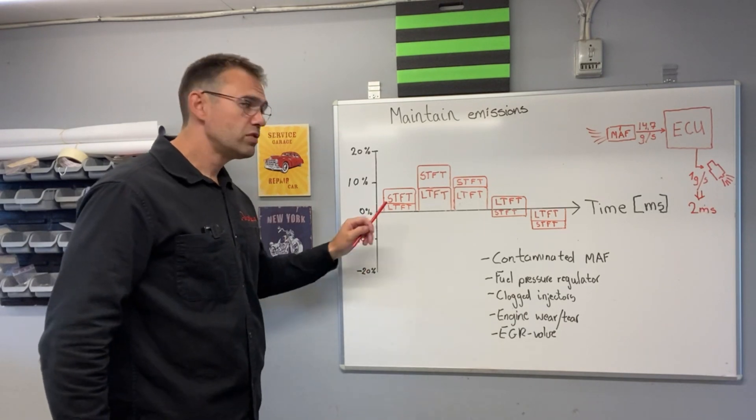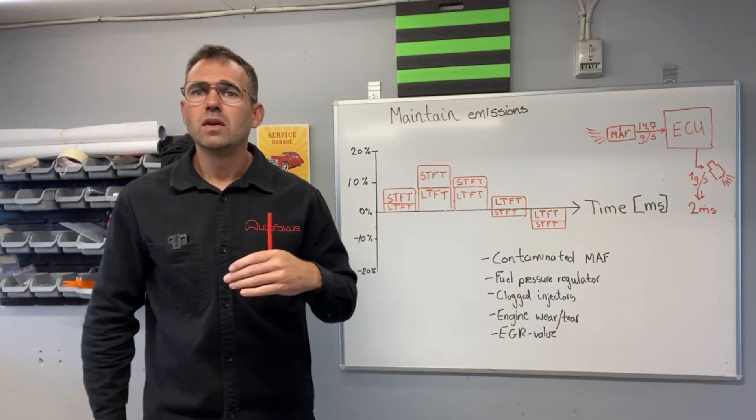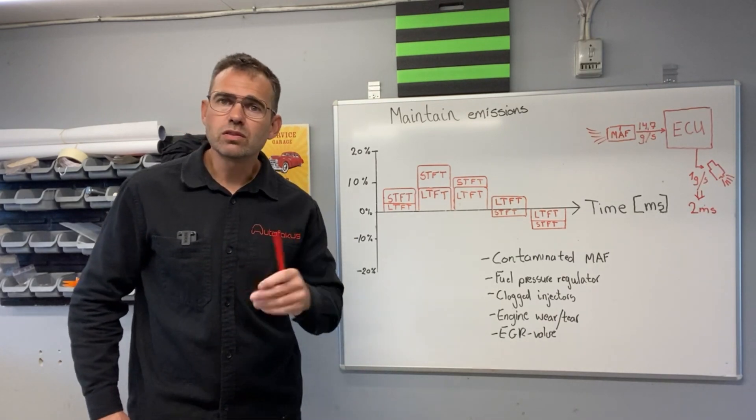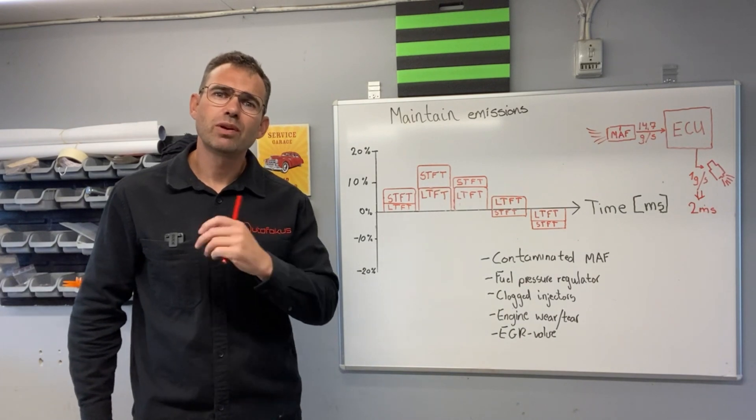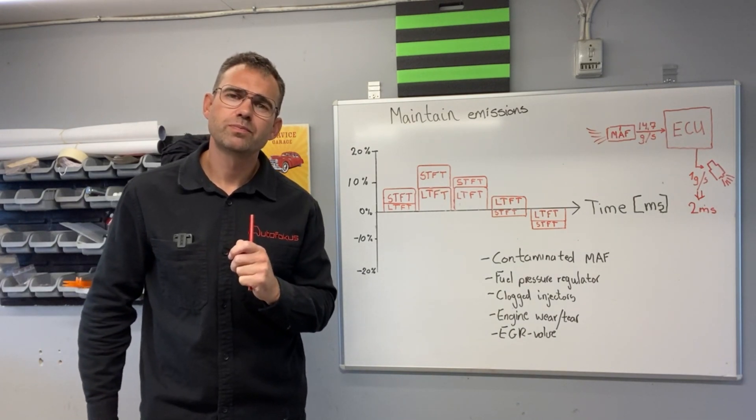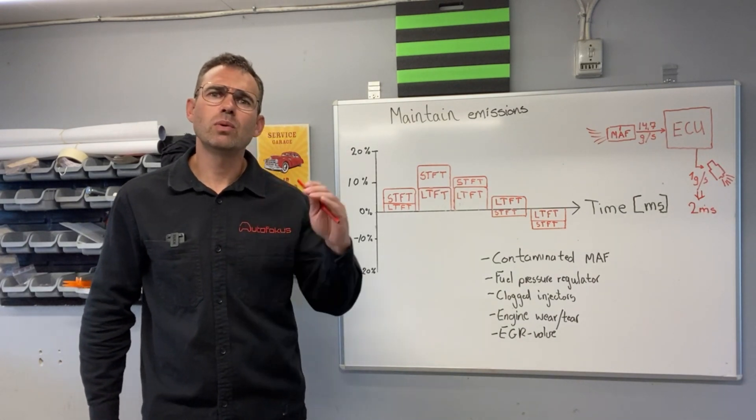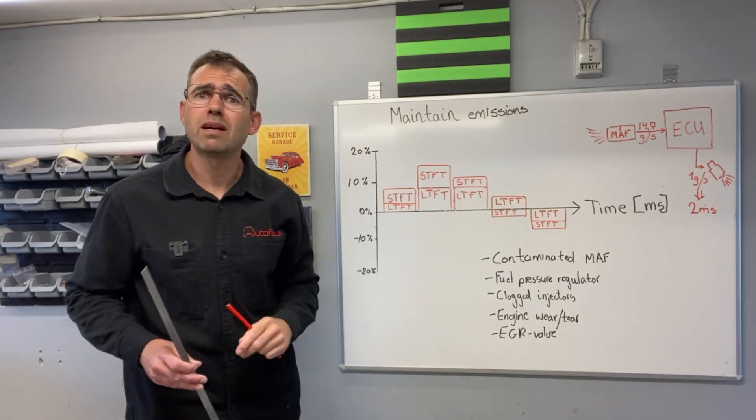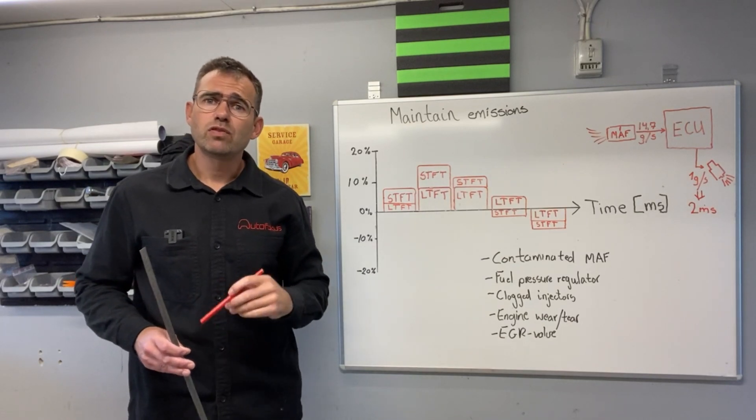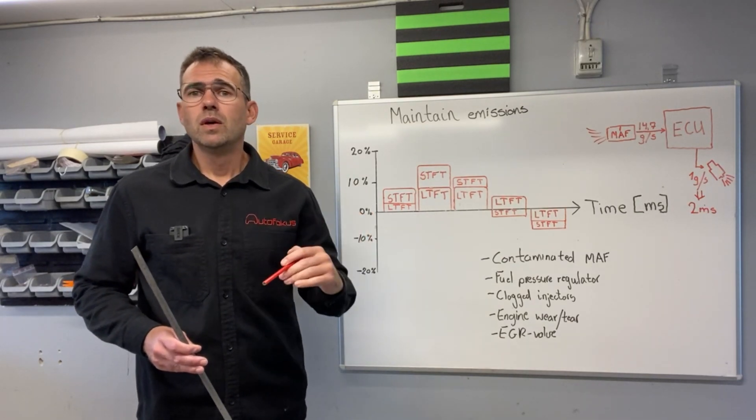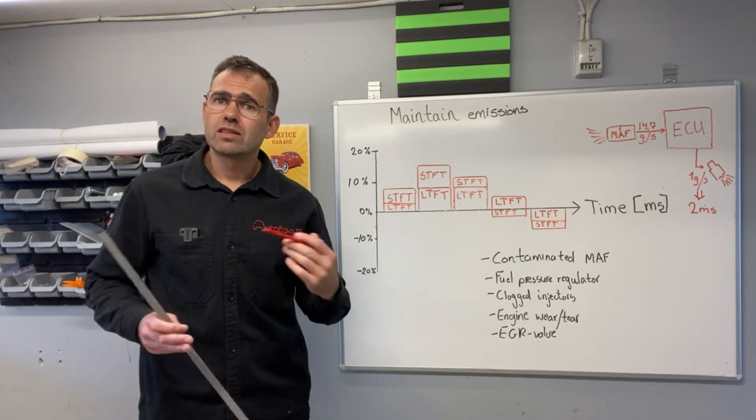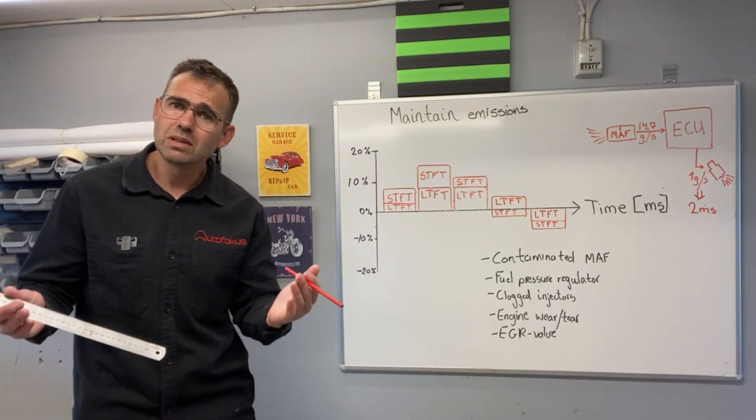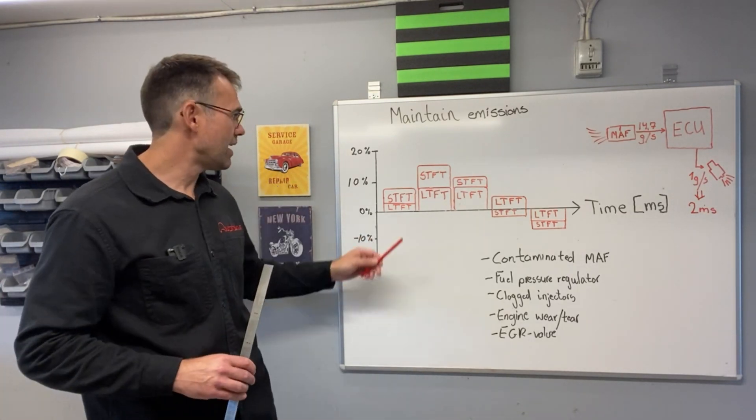When we have the long term fuel trim, it's not responding as a direct input from the O2 sensor. The long term fuel trim is more like a new set point from the electronic control unit. It responds over time. So if we have, let's use the example with the contaminated MAF sensor. If we have the short term fuel trim starting to tell the electronic control unit that we have a little lean mixture here, the short term fuel trim will react immediately on that, starting to add more fuel.